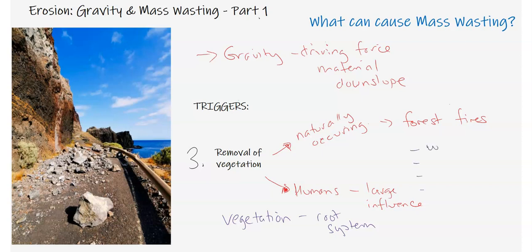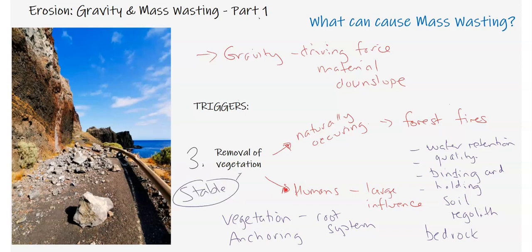So what does this do? The vegetation and the root system is going to provide various benefits for materials. Benefits being water retention, nutrients to keep the soil quality. We're looking at binding and holding the soil or even regolith in certain areas. And even the bedrock in some root systems can be held in place through the trees and vegetation. So this natural anchoring effect by the trees or shrubs or even grasses can enable the slope to be stable. However, if you obviously remove that vegetation, you're going to create an unstable environment where that anchoring system is no longer there.